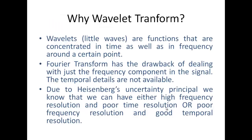So why is the wavelet transform actually essential? Wavelets, which are little waves, are functions that are concentrated in time as well as in frequency around a certain point. We have looked at the Fourier transform before, but it has the drawback of dealing with just the frequency components in the signal — the temporal details are not available. Now, Heisenberg's uncertainty principle tells us that we can either have high frequency resolution and poor temporal resolution, or better temporal resolution but poor frequency resolution.